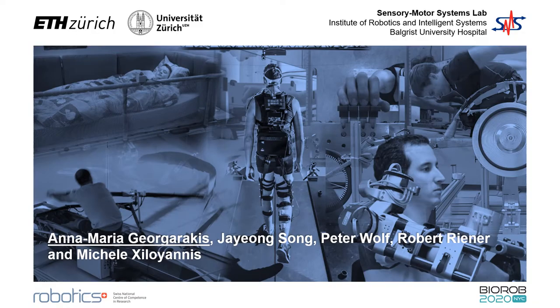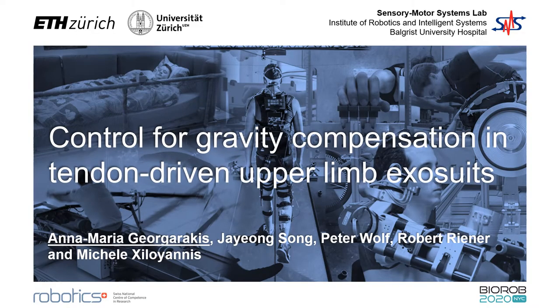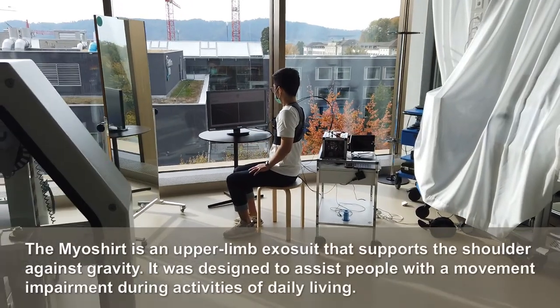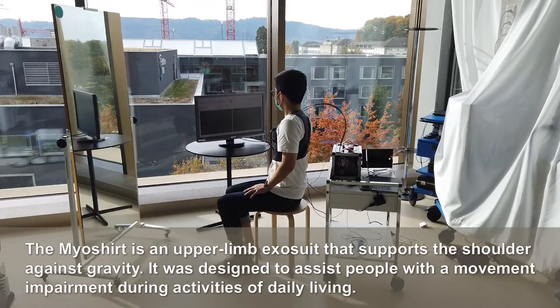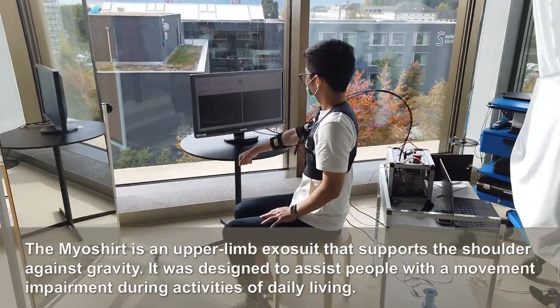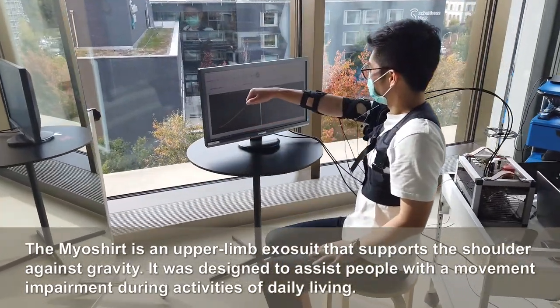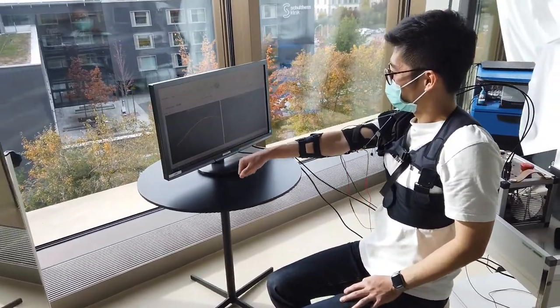Hi, I'm Marie. I'm Jake. And today we are presenting to you the research that we did while developing the Myoshirt. The Myoshirt is an upper limb exosuit that supports the shoulder against gravity. It was designed to assist people with a movement impairment during activities of daily living.